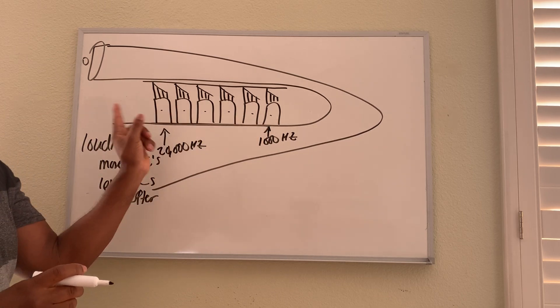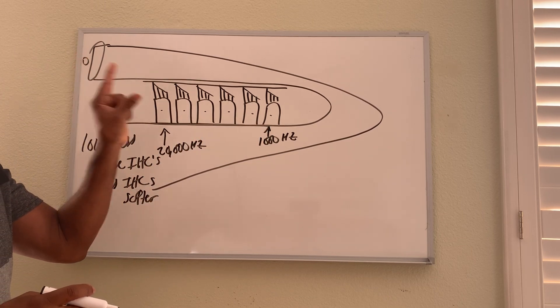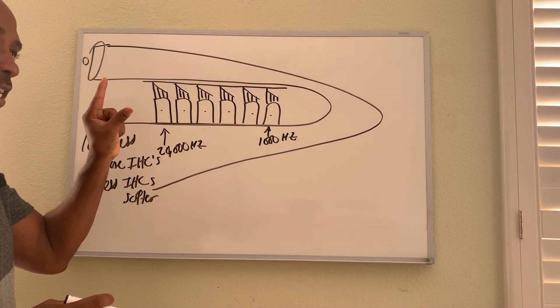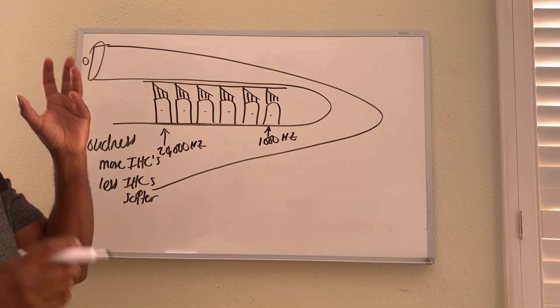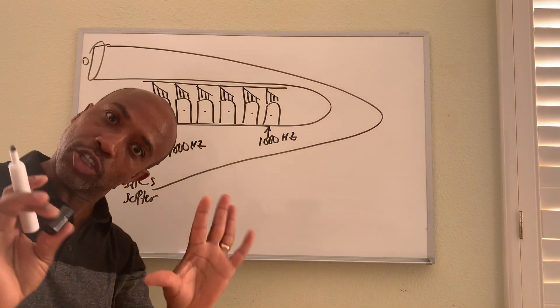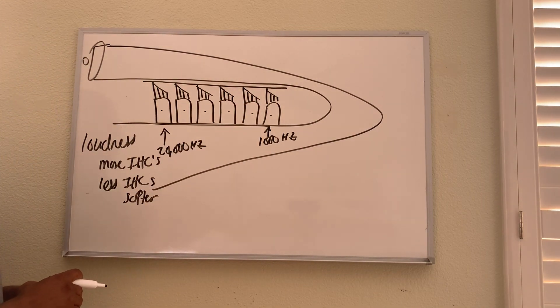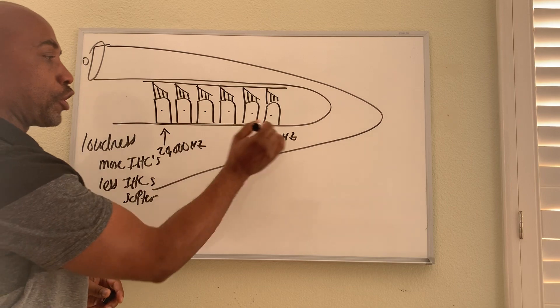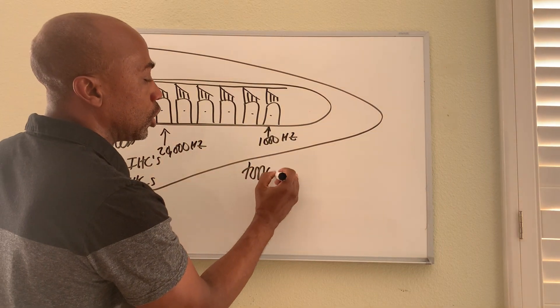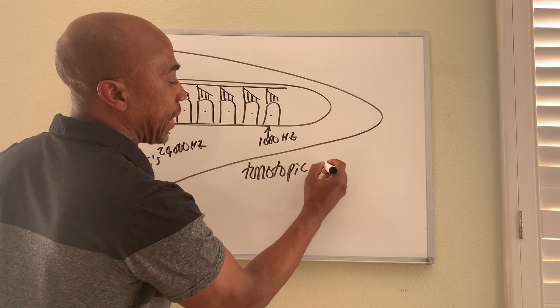And that's how the brain knows - depending on which cells are firing, that tells the brain what the frequency is and therefore what the pitch is. So you perceive a different pitch based on which of the inner hair cells are being activated, because they are linked to a certain frequency. It's called tonotopic mapping.